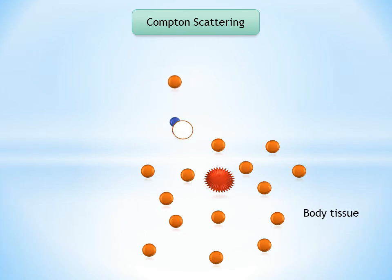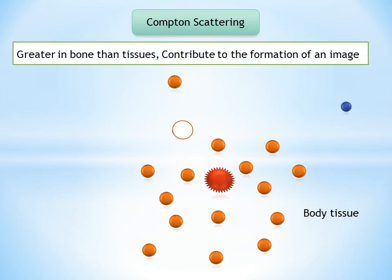The probability of a Compton interaction is directly proportional to the electron density of the absorber. As a result Compton interactions contribute to the formation of an image.